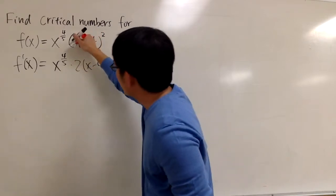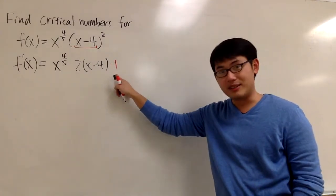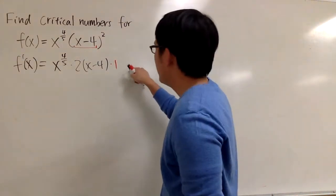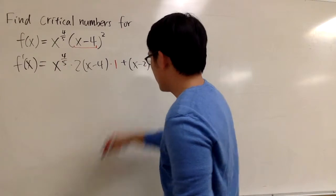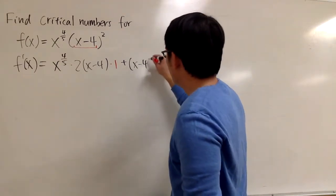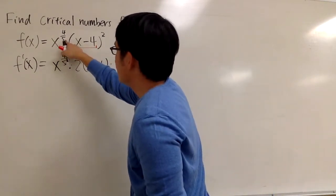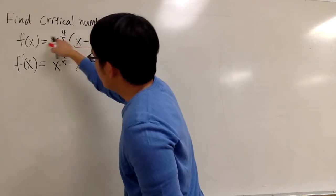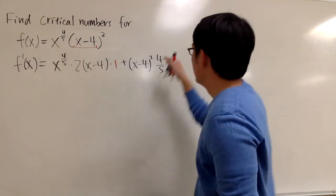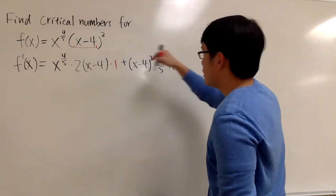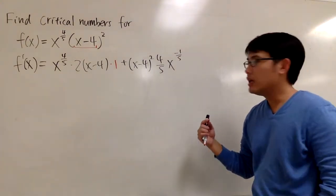But the derivative of x is just 1, so it doesn't matter. That's a good habit I will just show you. Times 1. You always use the chain rule, but in this case, it doesn't matter. And we are going to add the second part. I'm continuing with my product rule. So we have the (x minus 4) to the second power, and I will multiply by the derivative of the first. x to the 4/5, I will bring the power to the front. So I have 4/5. I will take away 1 from the exponent. So 4/5, x to the 4/5 minus 1 is negative 1 over 5.